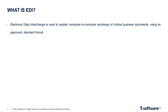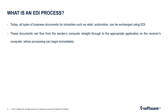Let us begin by understanding what is EDI. EDI, also known as electronic data interchange, is a general term used to explain computer-to-computer exchange of routine business documents using an approved standard format without human intervention. These documents include things like purchase orders, shipment updates, invoices and others. Today all types of business documents for industries such as retail, automotive and others can be exchanged using EDI.